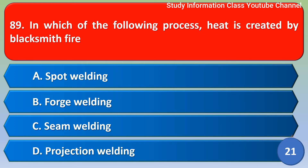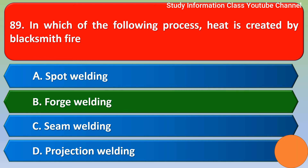Next question: In which of the following processes is heat created by blacksmith fire? Option A spot welding, option B forge welding, option C seam welding, option D projection welding. The correct answer is option B, forge welding.